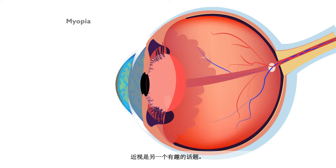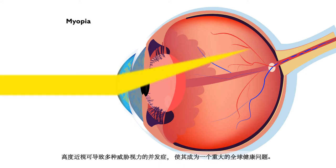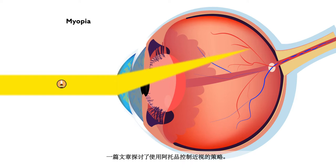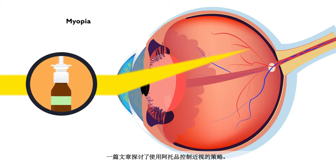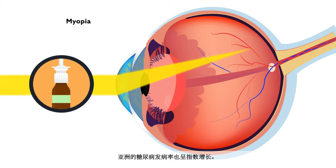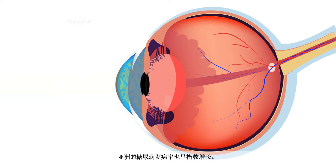Myopia is another topic of interest. A variety of sight-threatening complications can arise from high myopia, which has made the condition a major global health problem. One article examines the strategy of using atropine for myopia control.